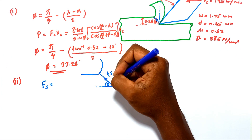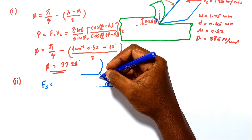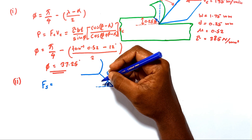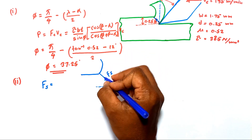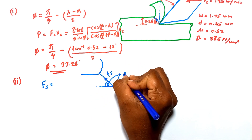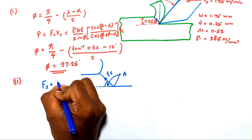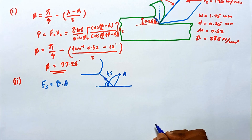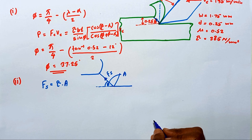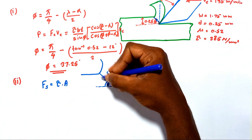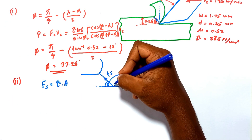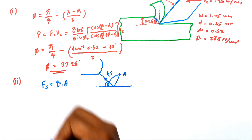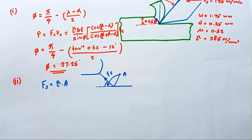The material yield shear stress is given as 385 N per square millimeter. Shear failure occurs along this direction. We can calculate the shear force required for this shear failure. The shear area is taken as A. The shear force is equal to tau times A, because shear failure occurs in the cross-sectional area A along this direction.